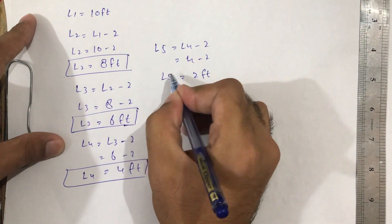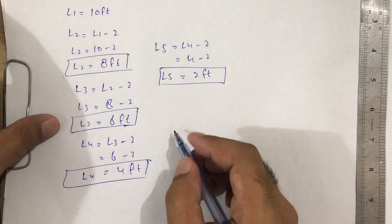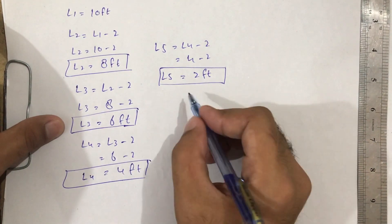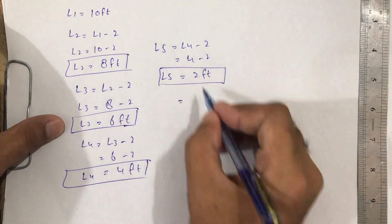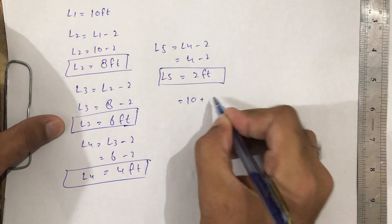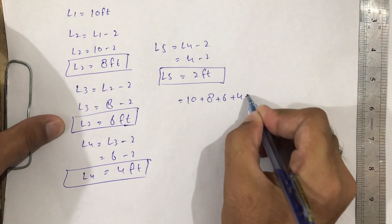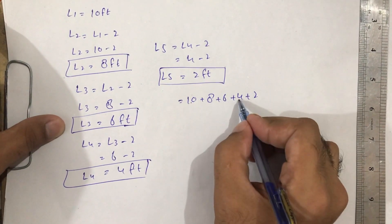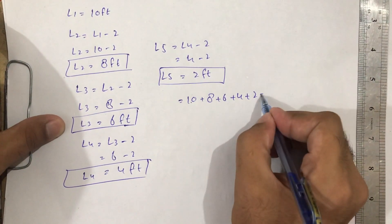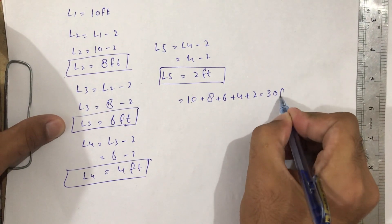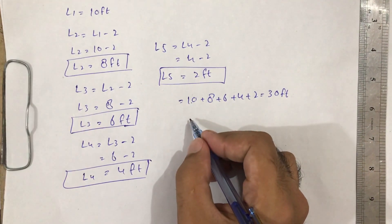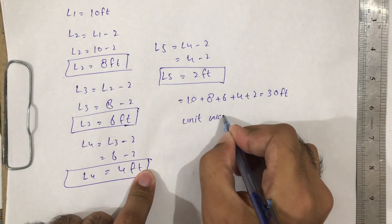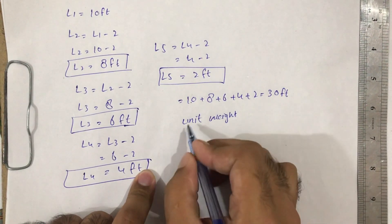Now we have to find the unit weight, but first we add all the lengths together. L1 is 10, plus L2 is 8, plus 6, plus 4, plus 2, giving a total length of 30 feet.